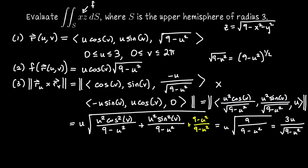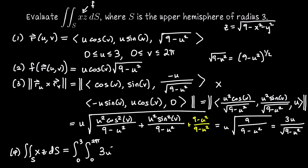Now we set up and evaluate the scalar surface integral using cylindrical coordinates: integral from 0 to 3, integral from 0 to 2π, of f times the cross product length. Notice the √(9 − u²) from f and the 1/√(9 − u²) from the cross product length cancel, leaving 3u² cos(v), dv du. Again, integrating cos(v) from 0 to 2π gives 0, so the result is the same: 0.